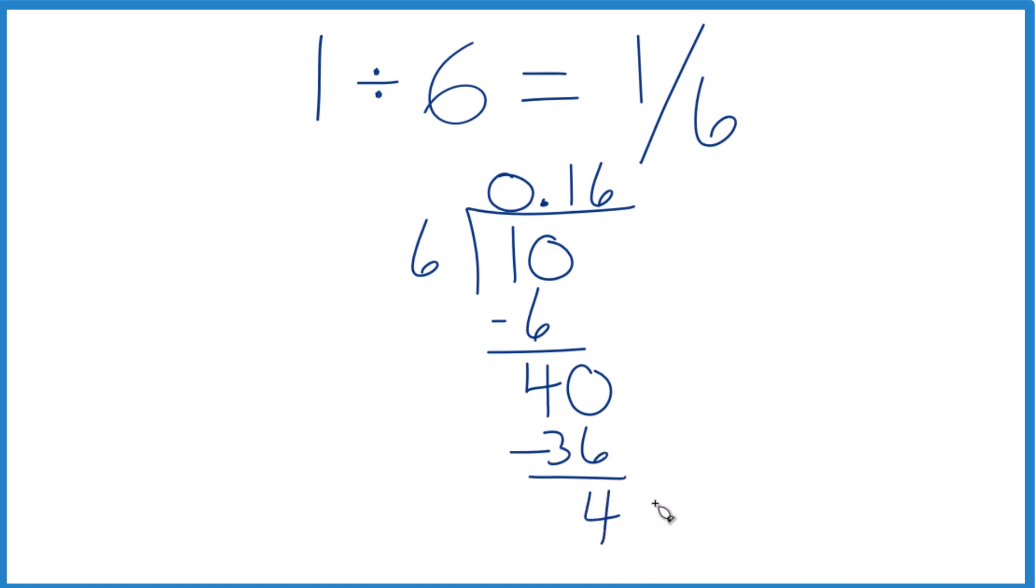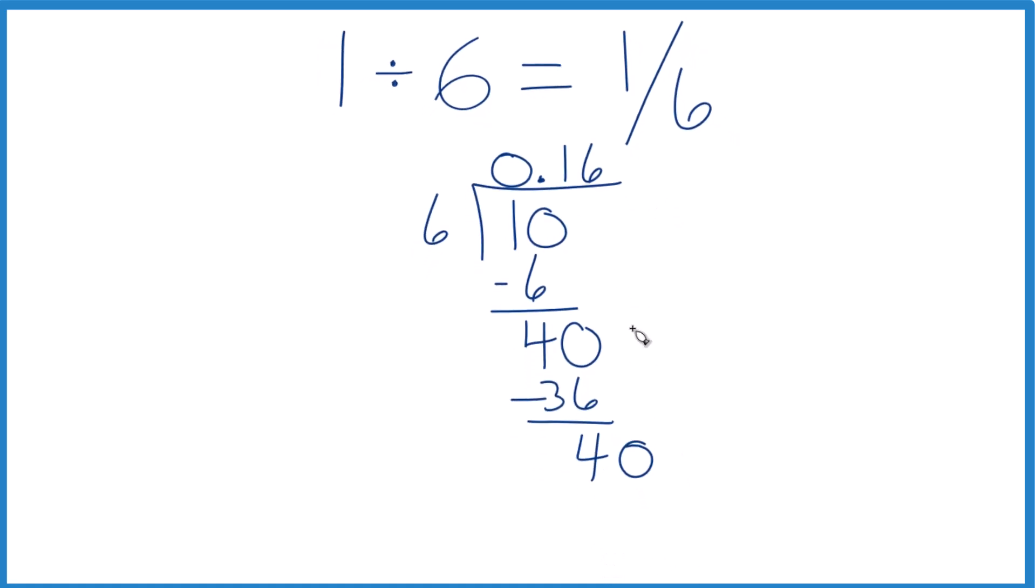Okay. Move over 1, call it 40, and 6 times 6 is 36. We subtract, we get 4 again. And you can see where this is going. Each time we just keep getting 6.